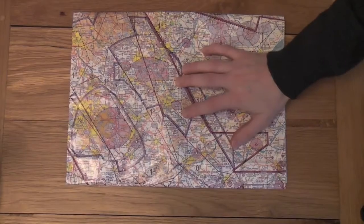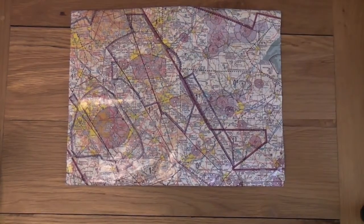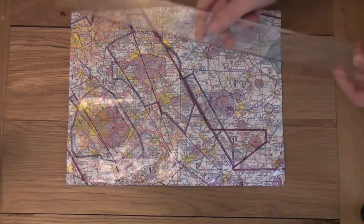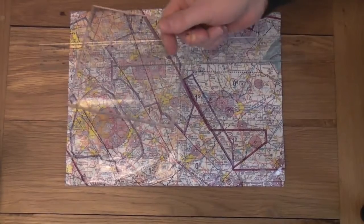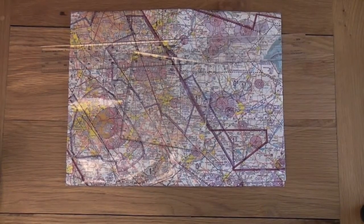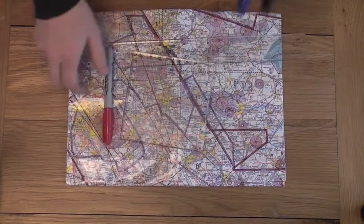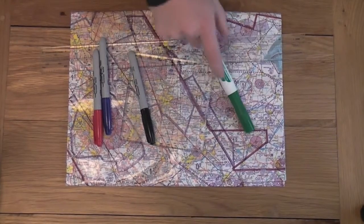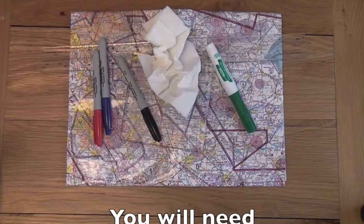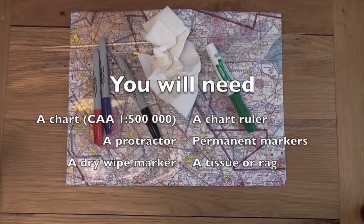For this tutorial we're going to need first of all a chart — a half million one-to-five-hundred chart. We'll also use a ruler, we have our square protractor, we have some pens, a dry white marker, which hopefully will come in useful later, and a piece of tissue paper. That's what we need.